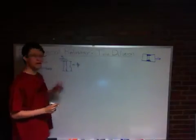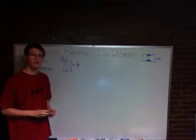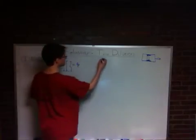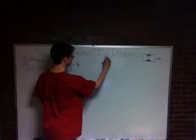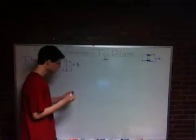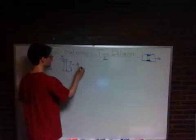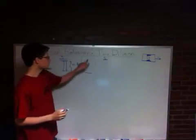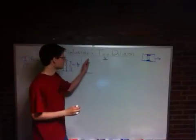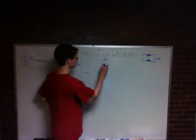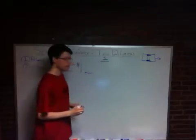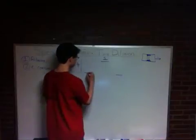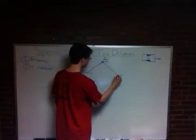In the S frame, the photon leaves the bottom mirror, but when it goes to the top mirror the train has moved to the right, which means the top mirror is now over here. When it goes back down, the bottom mirror will have moved even further — which means the photon is going to be taking a triangular path.